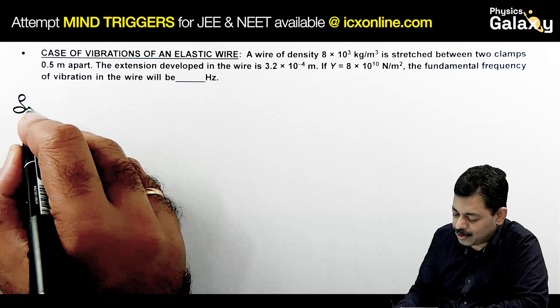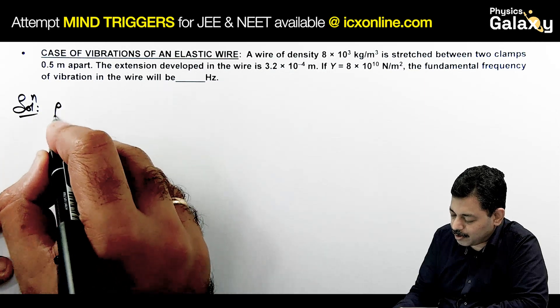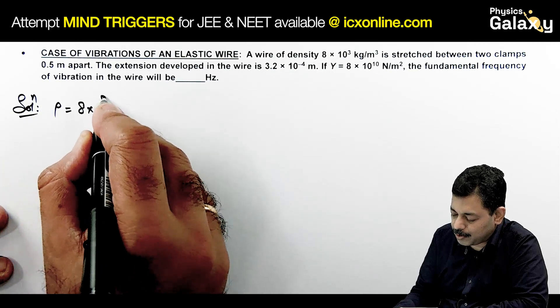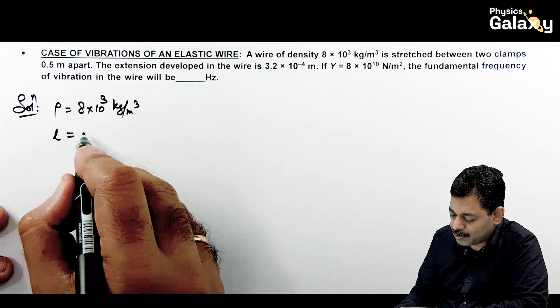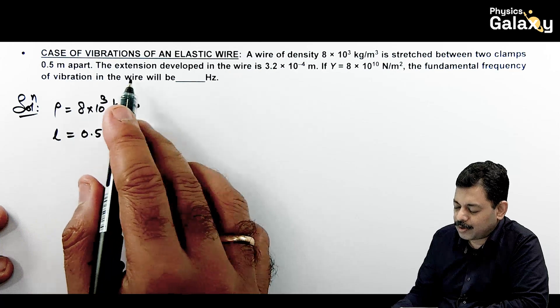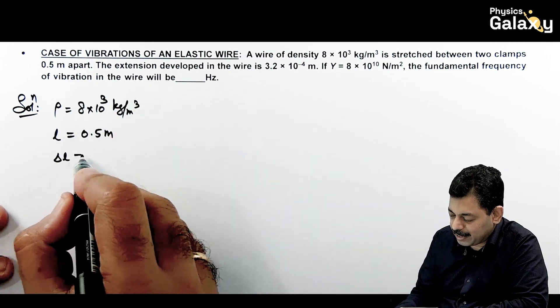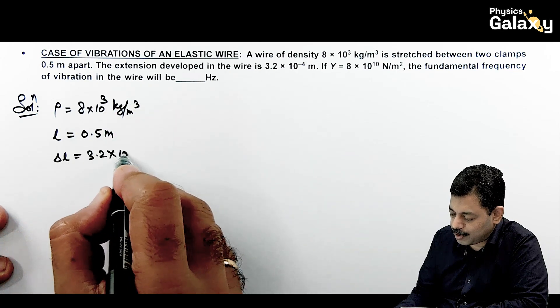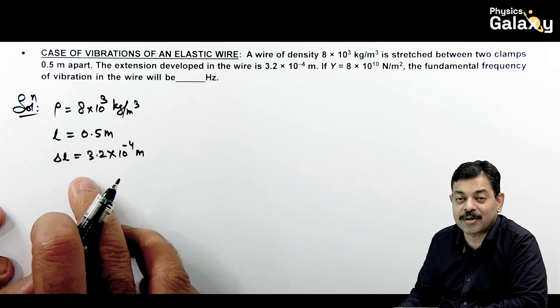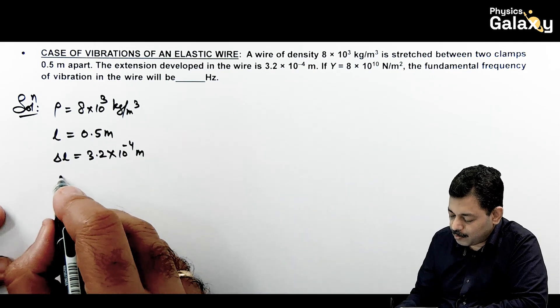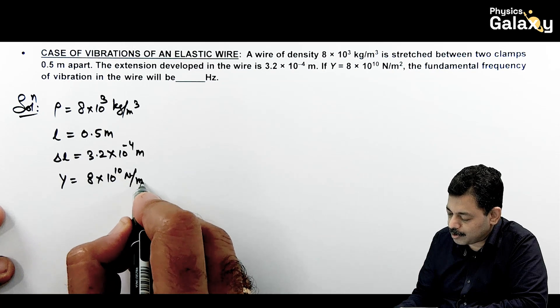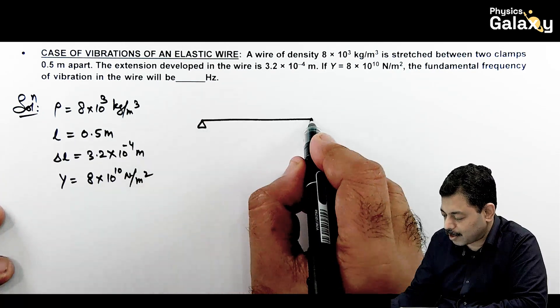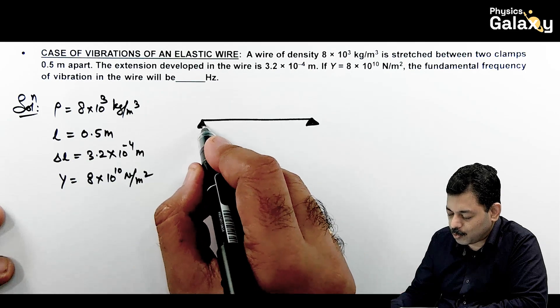Wire of density, it is given to us as data. Rho is 8 into 10 to power 3 kg/m³, stretched between two clamps. Length is given as 0.5 meter. The extension developed in the wire delta l is given to us as 3.2 into 10 to power minus 4 meter. It is exactly the case we have just now discussed. Young modulus is given to us as 8 into 10 to power 10 N/m².